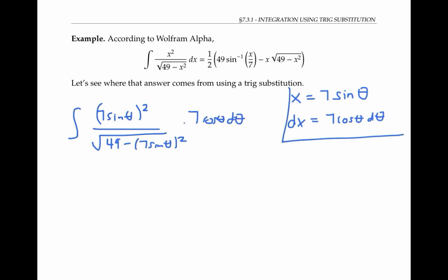Let me simplify a little. I have a seven cubed in the numerator times sine squared theta cosine theta. In the denominator I have 49 minus 49 sine squared theta.